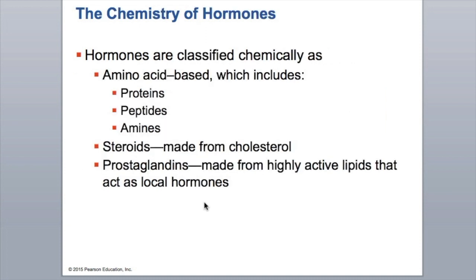Let's look at the chemistry. Hormones are classified into three groups: your amino acid bases — proteins, peptides, and amines; your steroids, which are cholesterol-based chemicals usually found in gonads or the adrenal cortex; and then you have your prostaglandins, which are from lipids and are your local hormones, with a smaller impact area.